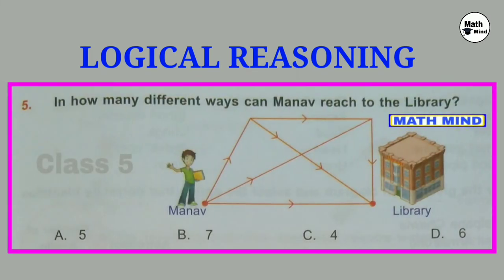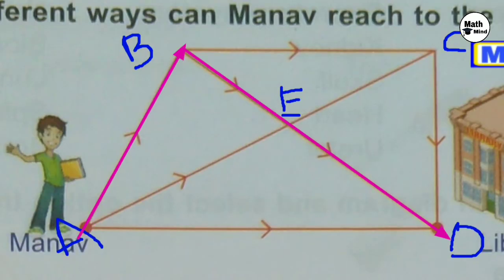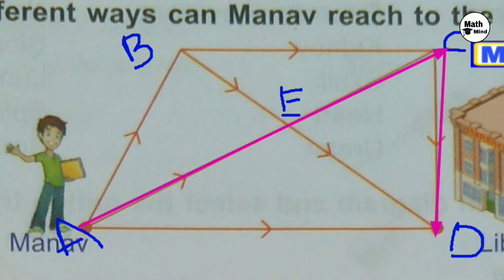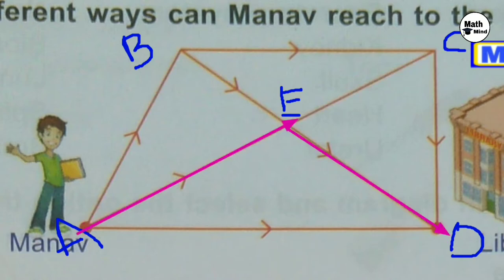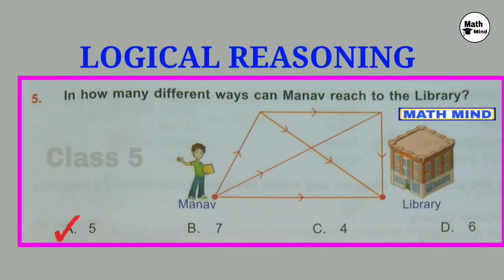Question number 5: How many different ways can Manav reach the library? Correct option is A. Manav can reach the library through A-B-C-D, A-B-E-D, A-E-C-D, A-E-D, and A-D. So total five different ways.